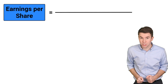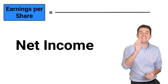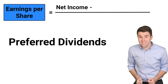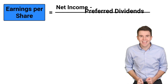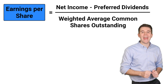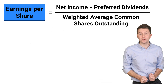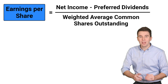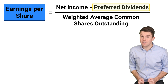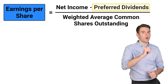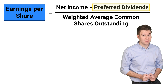Now to compute basic earnings per share, we take net income, subtract any preferred dividends, and then divide that by the weighted average number of common shares outstanding during that period. If the company doesn't have any preferred stock, then we put zero for preferred dividends.